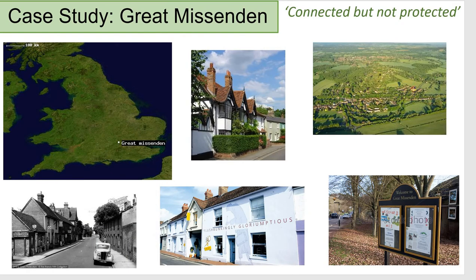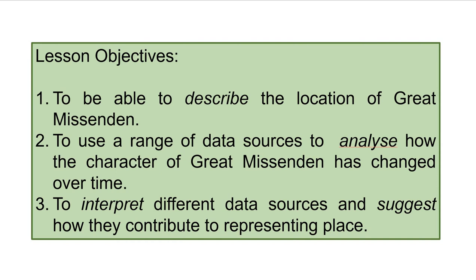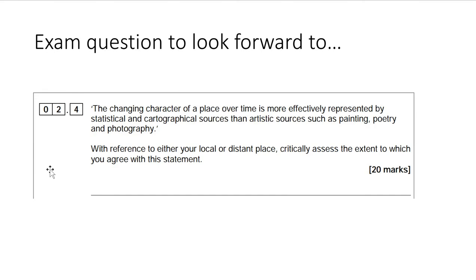Where is it? You can see we'll look at the location of Great Missenden in just a moment. Referring back to the map on the previous page, you can describe the fact that it is north-west of London on the rural-urban fringe. Today we're going to describe the location, look at different data sources to see the character of Great Missenden and how it's changed over time. This is the exam question we will address at the end: 'The changing character of a place over time is more effectively represented by statistics and cartographical sources than artistic sources.'